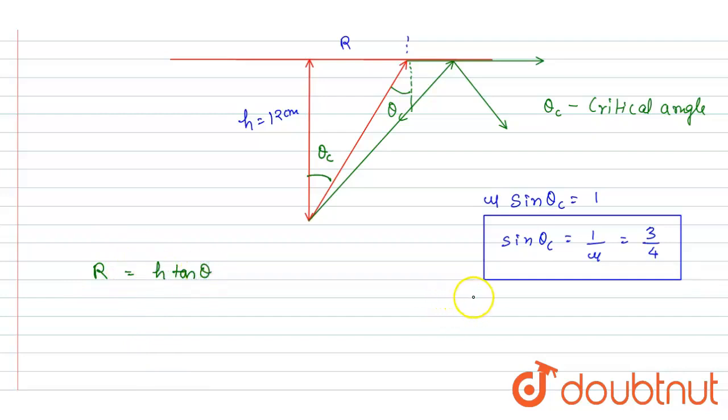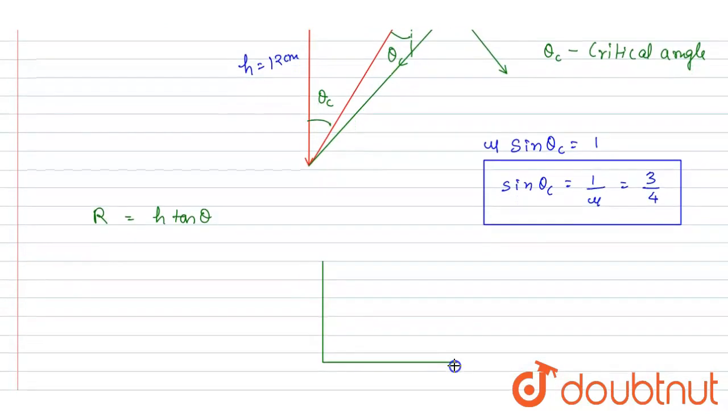So you can get this tan theta if you know sine theta is equals to... See, if I make a triangle like this and I'm saying this angle is theta c.